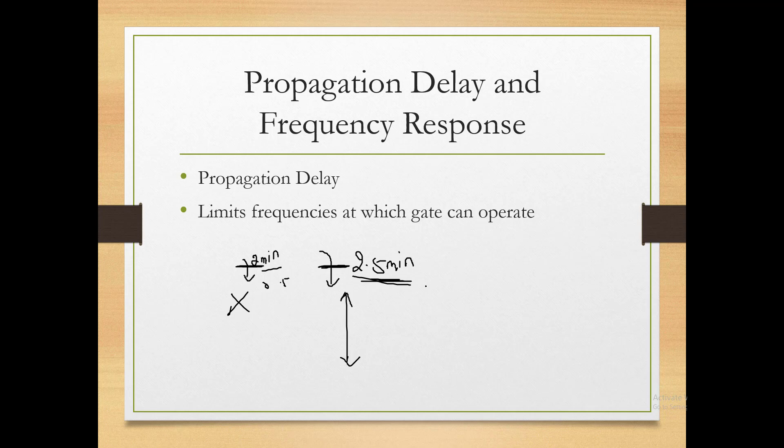High frequency means short propagation delay; low frequency means high propagation delay. A gate with a 3-nanosecond delay is faster than one with a 10-nanosecond delay. The 3ns gate has a higher operating frequency. So: lower propagation delay → higher frequency; higher propagation delay → lower frequency.